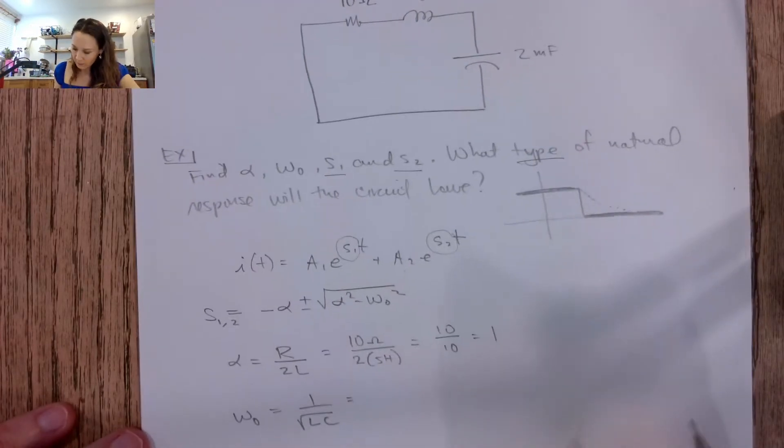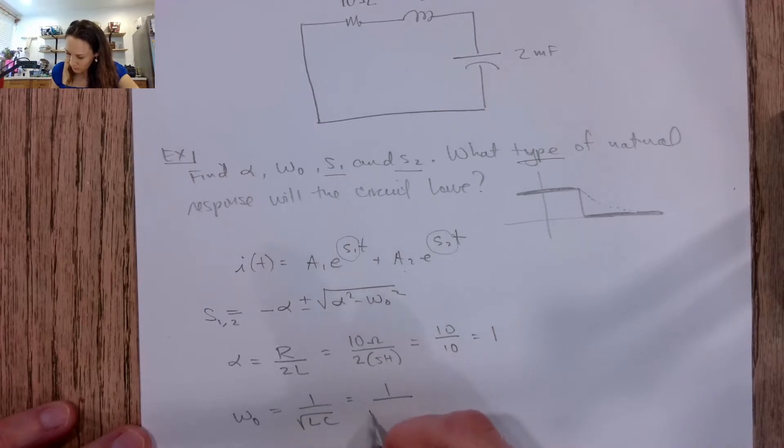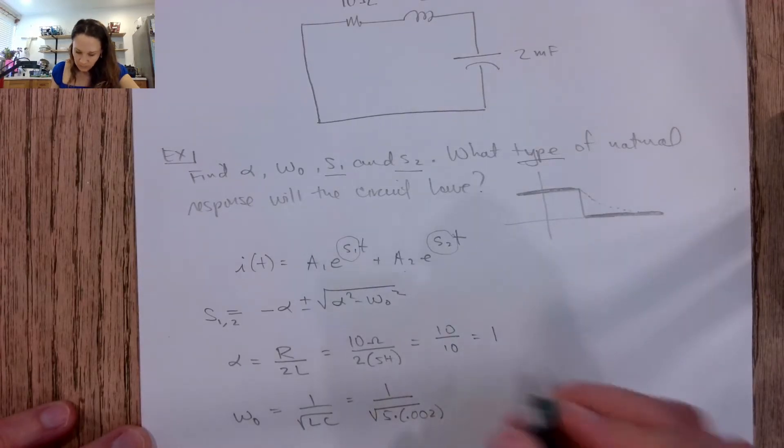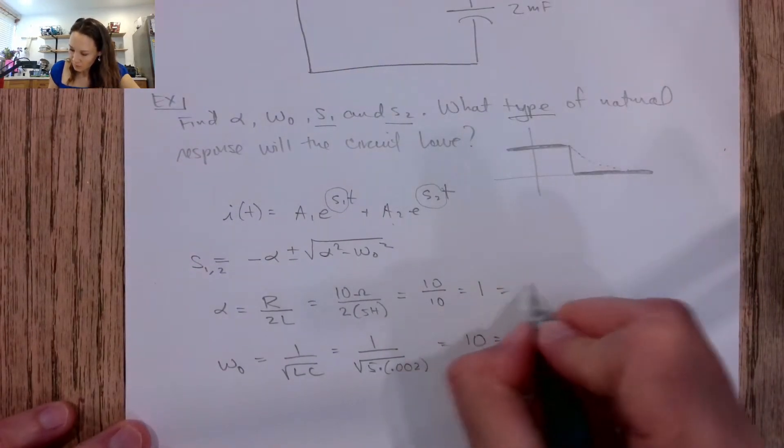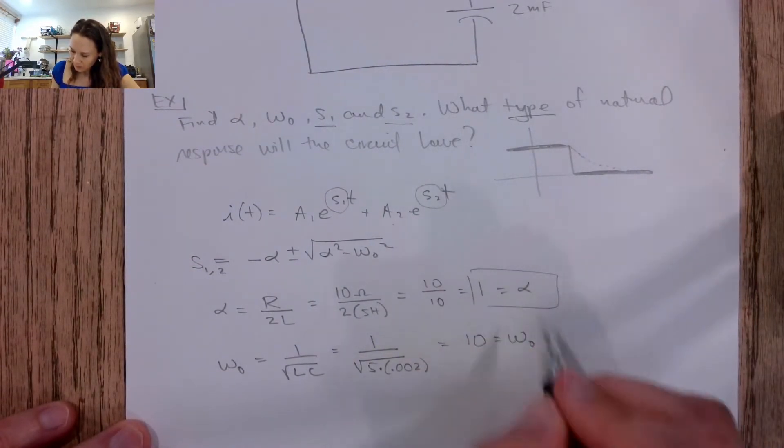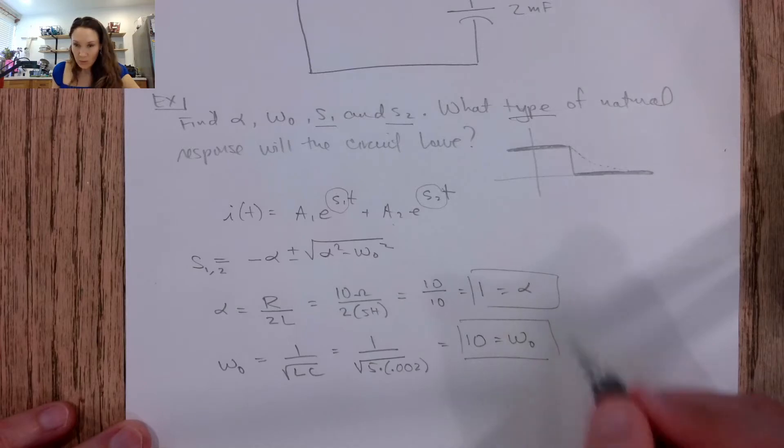Then if I do the same thing here for omega naught, this is going to be 1 over the square root of 5 times 0.002, so this gives me 10 is my omega naught.